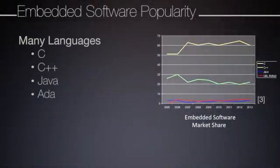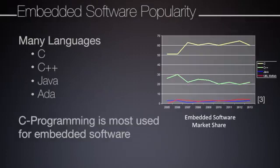This speeds up embedded systems prototyping timelines and the rate with which you can hit the market with your product. There are many embedded software languages used in the industry, such as C, C++, Java, and Ada, but C programming is the most widely used language for embedded software design.